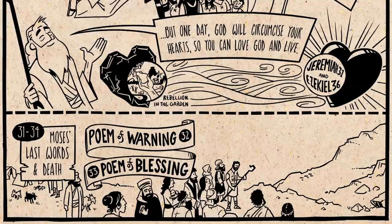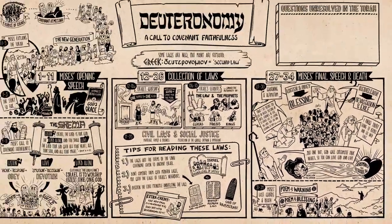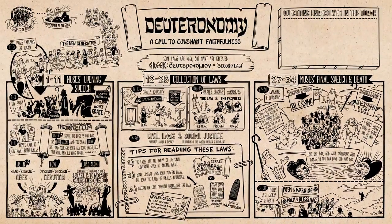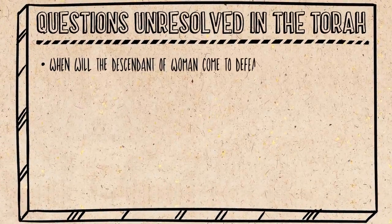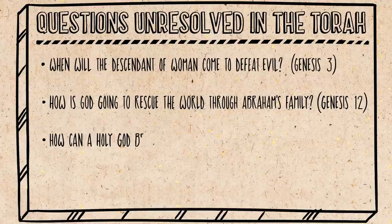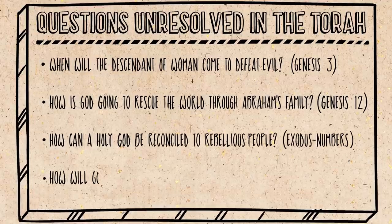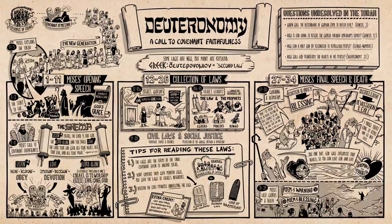So Moses ends his speech with a poem of warning and then a blessing, and then he walks up onto a mountain and he dies. And so the Torah draws to a close. All of the major plot tensions of the biblical story are in place but left totally unresolved. When is the descendant of the woman going to come and defeat evil? How is God going to rescue the whole world and bless all nations through this family? How can God's holiness be reconciled with people who are continually rebellious? And how is God going to transform the hearts of his people? You just have to keep reading to find out. But for now, that's what the book of Deuteronomy is all about.